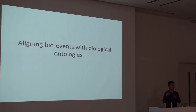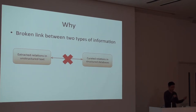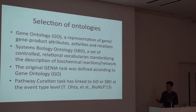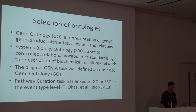Because we have compared structures, now we are trying to go into a higher information granularity and link the events with the biological ontologies. As we discussed before, there is a broken link between the extracted relations from unstructured text and the curated relations in structured databases. Specifically, we picked the Gene Ontology, which is a representation of protein and gene attributes, activities, and relations. We also use the Systems Biology Ontology, which is a set of controlled relational vocabularies standardizing the description of biomedical reactions or networks.